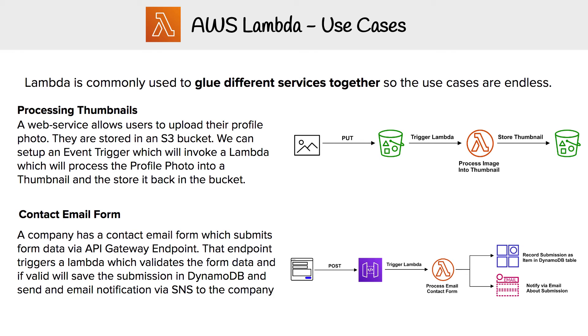When thinking about how to use AWS Lambda, there is a variety of use cases because Lambda is like glue — it helps you connect different services together.